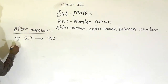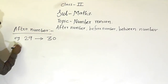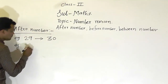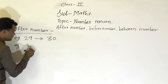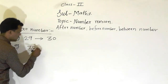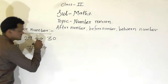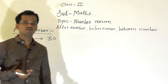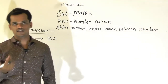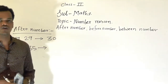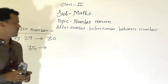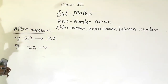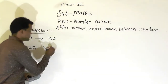One more example we will see here. After number of 35 — now in the number series, after 35 which number comes? That is 36. So the after number of 35 is 36.